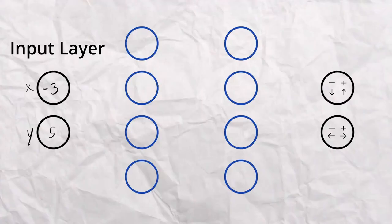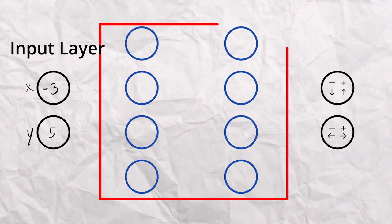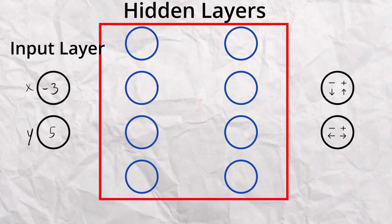Then we have the layers in the middle of the network, and these are called hidden layers. The hidden layers are where most of the calculations in the network happen. They're called the hidden layers because the values in these layers don't leave the network. So if you were to think of the neural network as a black box that does calculations, you would give it the input layer and it would give you back the output layer, while the hidden layer stays hidden inside the box.